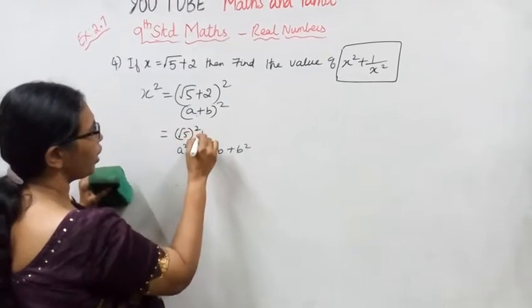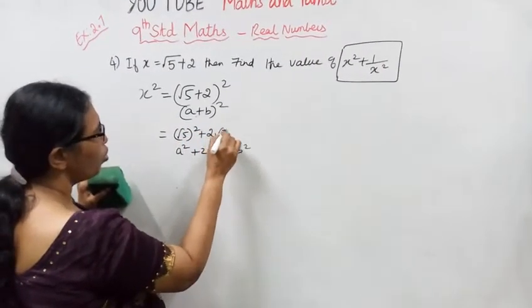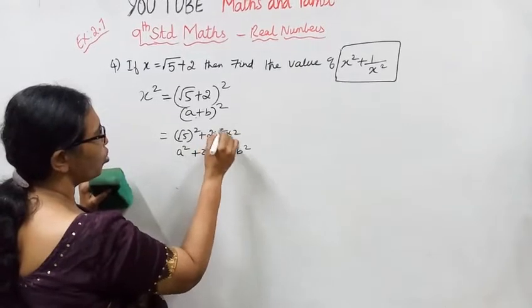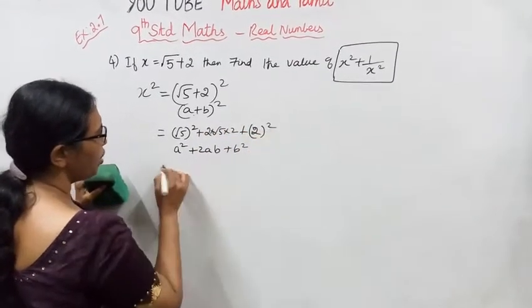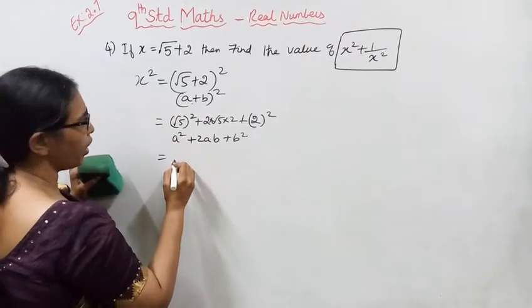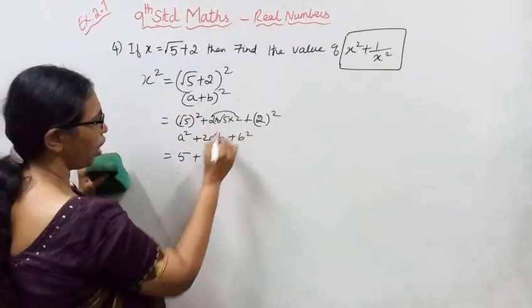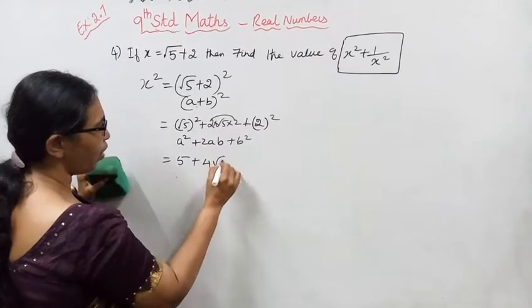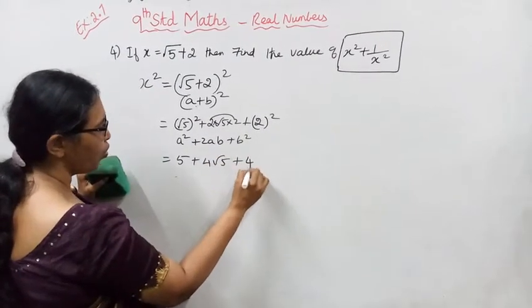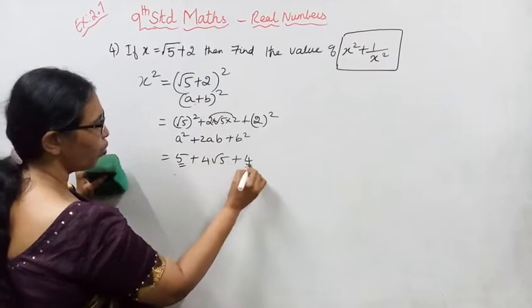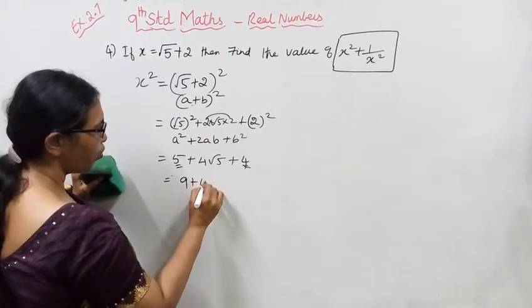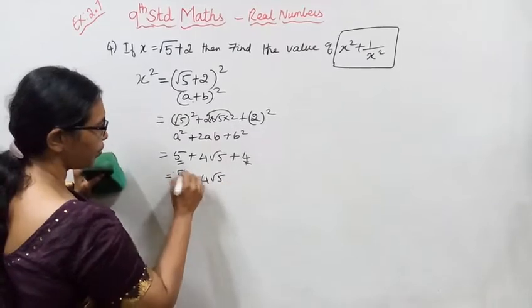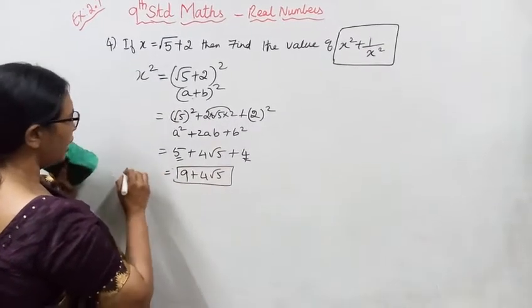So 5 plus 4 equals 9, giving us x² = 9 + 4√5.